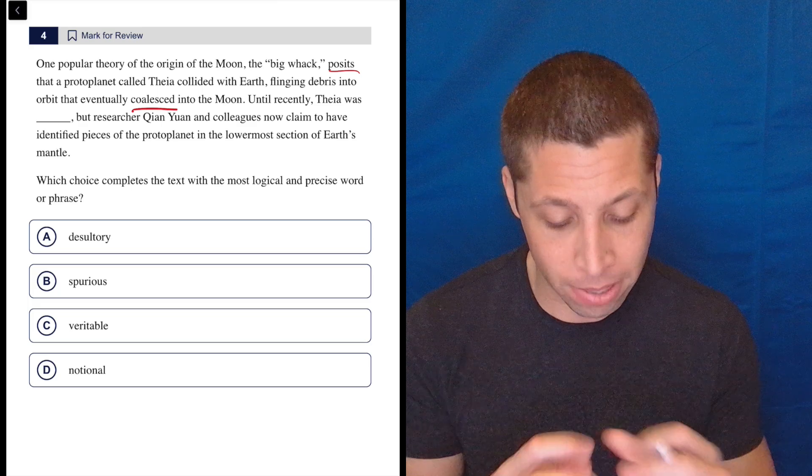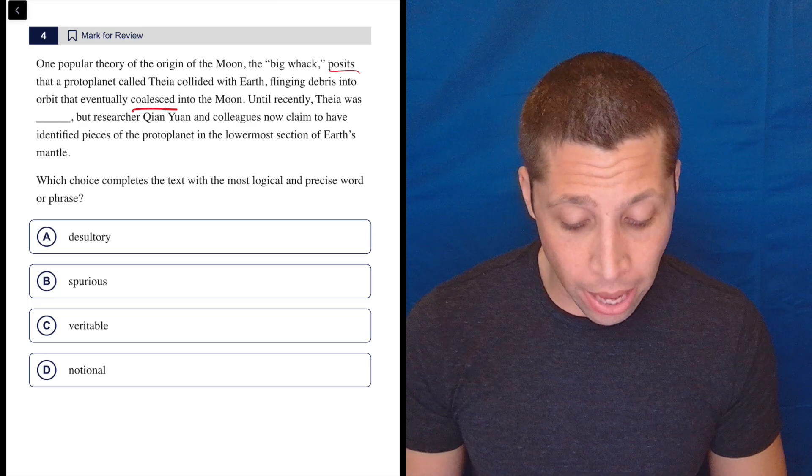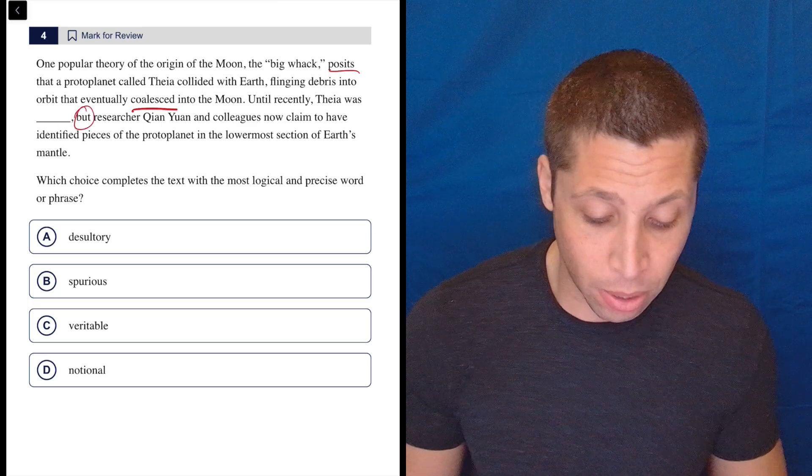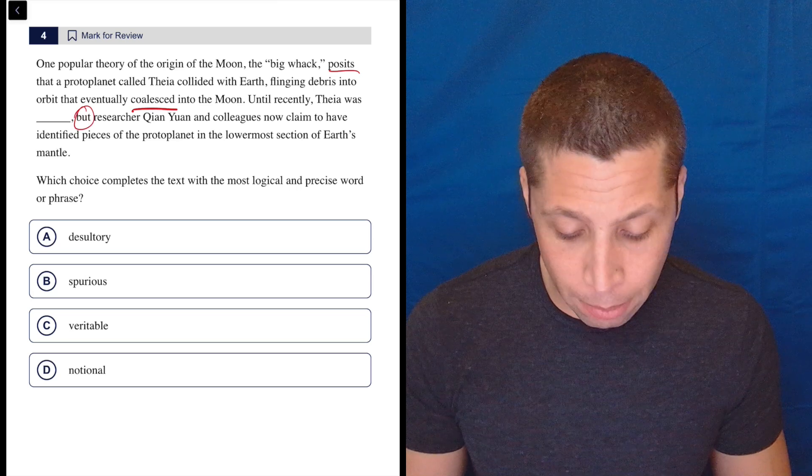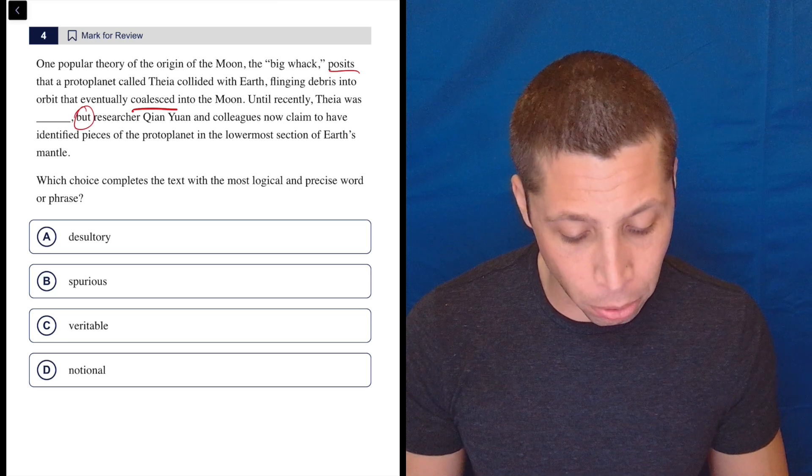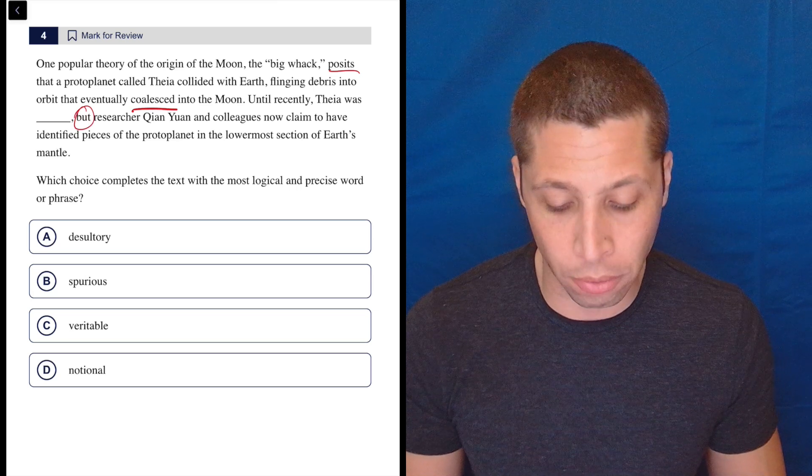And then coalesce means come together. Until recently, Theia was blank. But, there's that but we see in a lot of these questions, this person now claims to have identified pieces of the protoplanet in the lowermost section of Earth's mantle.